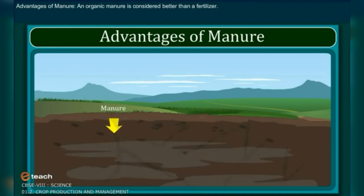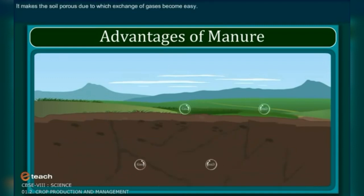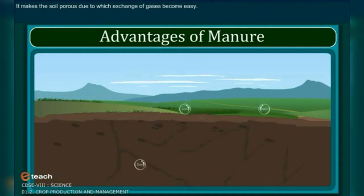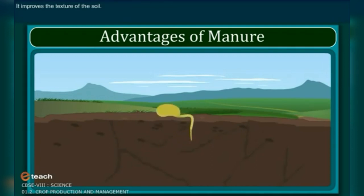Advantages of manure. Organic manure is considered better than fertilizers because it enhances the water holding capacity of the soil, makes the soil porous so that exchange of gases becomes easy, increases the number of friendly microbes, and improves the texture of the soil.